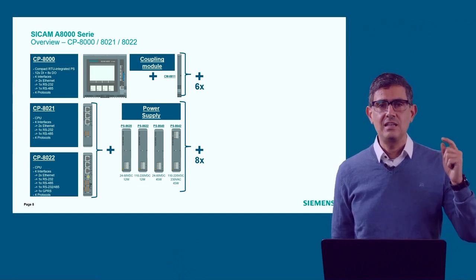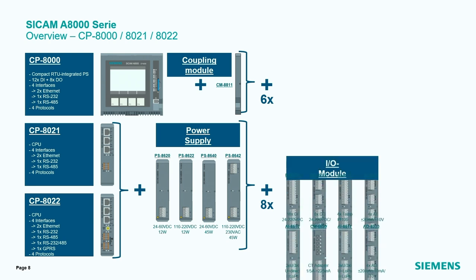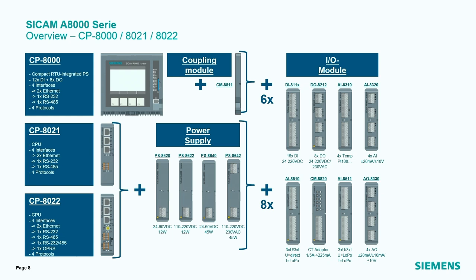For expansion you need the CM8811 coupling module. For the other RTUs — the CP821 and CP822 — you can attach additional modules without the need of a coupling module. The available modules include binary input modules with 16 inputs each, and binary output modules such as the O8212 with eight binary outputs.